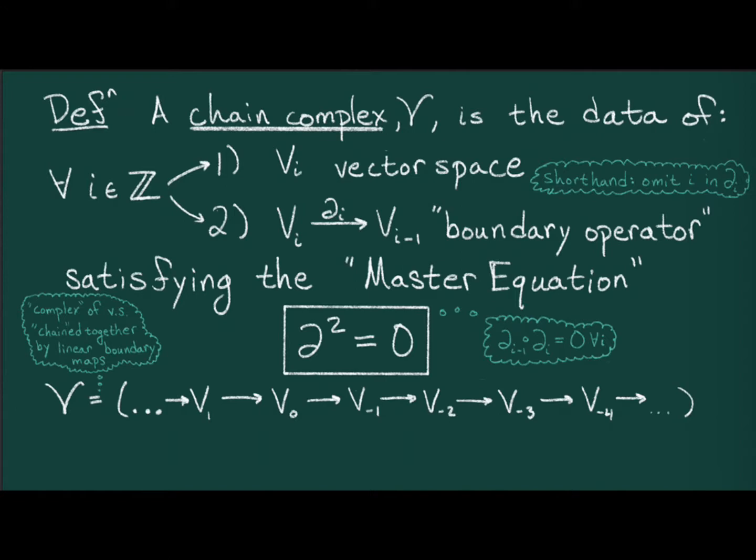In fact, there are some mathematicians who go as far as to refer to a chain complex as a vector space. And hopefully it's clear how what I just said about differential calculus fits into this perspective. The various derivative operators are the boundary map, and the master equation in this case is precisely the statement that partial derivatives commute.